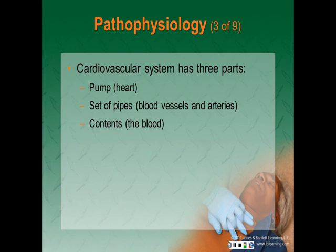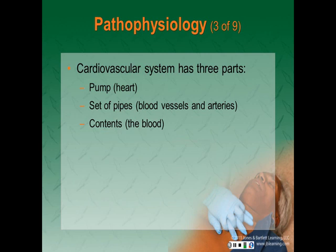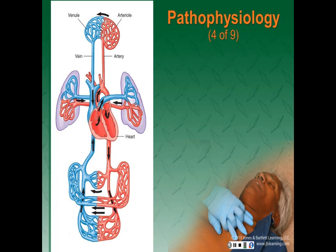The cardiovascular system has three parts: a pump, which is the heart — actually a double-sided pump; a set of pipes, which are blood vessels and arteries that act as the container; and the contents of the container, which is the blood. I often refer to the cardiovascular system as being just like the water system in your home. You have to have some type of pump or pressure, pipes to carry the fluid, and the contents or the fluid.